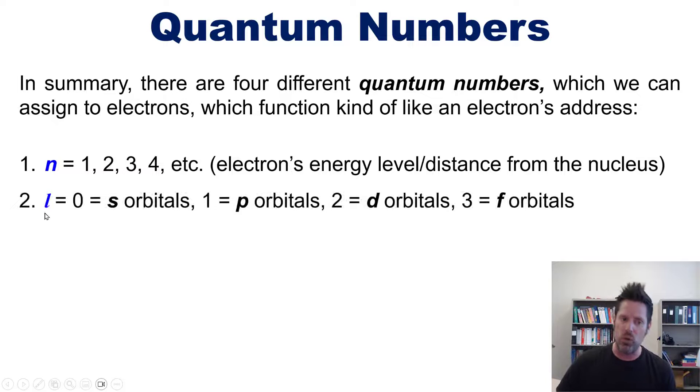The second is the azimuthal quantum number l, which is equal to zero for s orbitals, one for p's, two for d's, and three for f's.